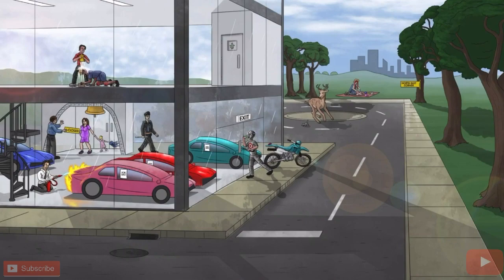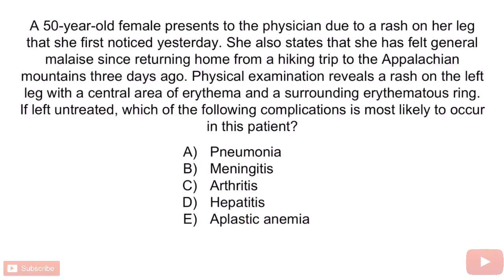Now that we've covered the image, let's review with a question. A 50-year-old female presents to the physician due to a rash on her leg that she first noticed yesterday. She also states that she has felt general malaise since returning home from a hiking trip to the Appalachian Mountains three days ago. Physical examination reveals a rash on the left leg with a central area of erythema and a surrounding erythematous ring. If left untreated, which of the following complications is most likely to occur? A, pneumonia. B, meningitis. C, arthritis. D, hepatitis. Or E, aplastic anemia.